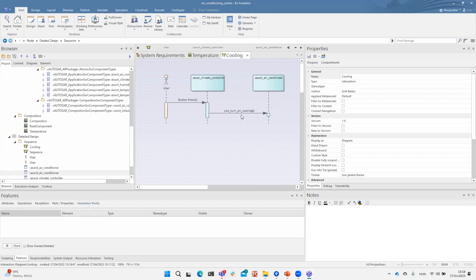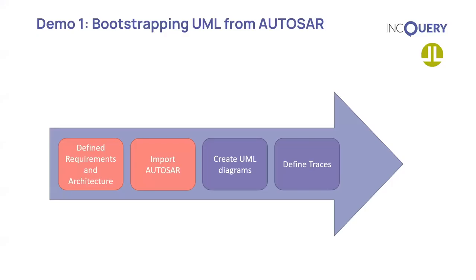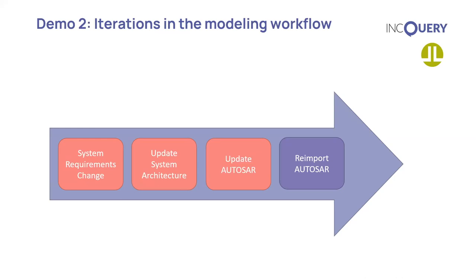In the automotive domain we are developing highly complex applications, which involves complex models edited by multiple people collaboratively. The V-model cannot be followed in a waterfall style — every process must prepare for changes that need to be propagated through each document. To ensure synchronization we adhere to the 'one source of truth' principle: every piece of information has a primary source and any redundancy shall be propagated in a single well-defined direction. In our example, we simulate a change request involving a new requirement propagated to the system architecture and then to the AUTOSAR model.